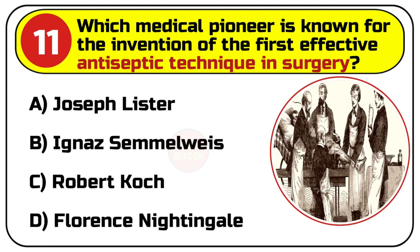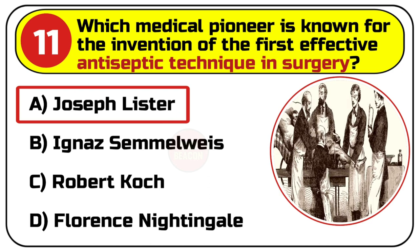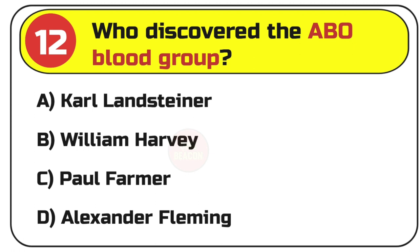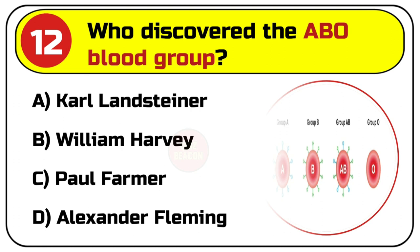Correct answer is A. Joseph Lister. Question number 12. Who discovered the ABO blood group? Options are: A. Karl Landsteiner, B. William Harvey, C. Paul Farmer, D. Alexander Fleming.